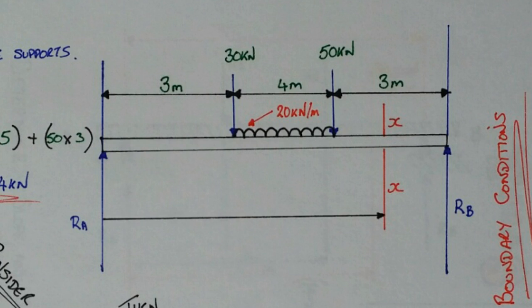Number one, for a uniform distributed load that covers the complete span of the beam the Macaulay method is not appropriate, you can't use it. If we wish to find the slope and deflection for UDLs which span the entire beam then we need to use successive integration methods.